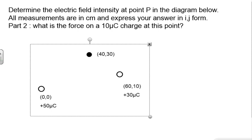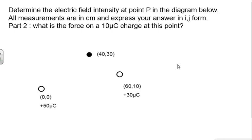All right folks, I've got another question today. This one's an electric field intensity with different points. This one's not too bad, but it seems to cause people trouble when they see it on the test. So I thought we'd work one out. The question is, determine the electric field intensity at point P and the diagram below. All measurements in centimeters, and express your answer in i-hat, j-hat form. And part B, what is the force on a 10 microcoulomb charge at this point? So here's my diagram. I'm looking for electric field intensity.